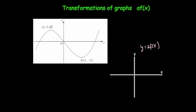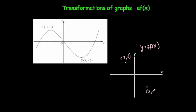The turning point was at minus 2, 3. We're going to double the y coordinate, so it's going to go minus 2 across but 6 up this time — the coordinate would be minus 2, 6. Remember, you're just multiplying the y coordinate by the number in front of the function. The other turning point was 3 across, 5 down. If you double it, it's going to go 3 across, 10 down, so the coordinate would be 3, minus 10.